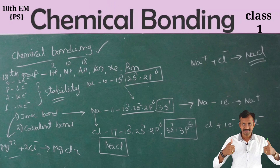This is the electronic configuration. In the third orbit, there is s-orbital and p-orbital. The 3p orbital has 3p6 when full, but chlorine has 3p5 — it is deficient by one electron. Chlorine needs one electron.